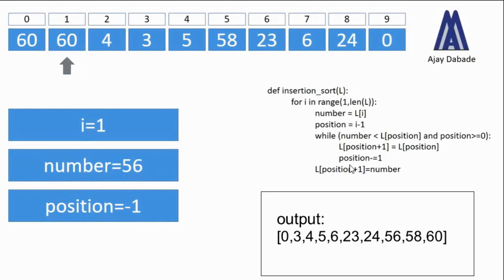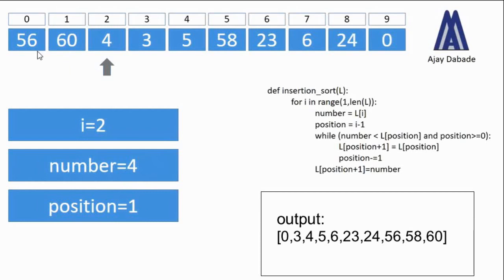So both index 0 and index 1 will have the same value at this point. The variable position is decremented by 1 — it was 0, now it becomes minus 1. The next time the loop runs, it terminates because position is no longer greater than or equal to 0. Outside the loop, we execute l[position + 1] = number. Since position is minus 1, position plus 1 equals 0, so we store number — which is 56 — at index 0. So 56 is stored at the zeroth index.